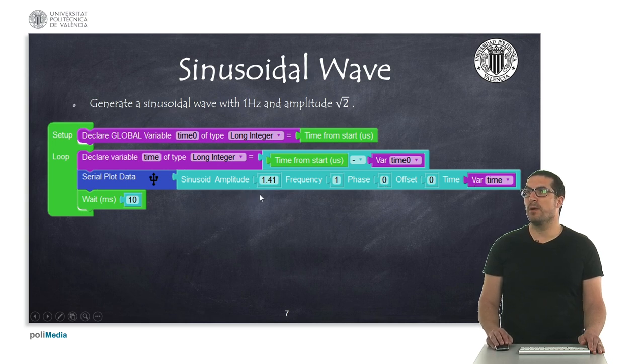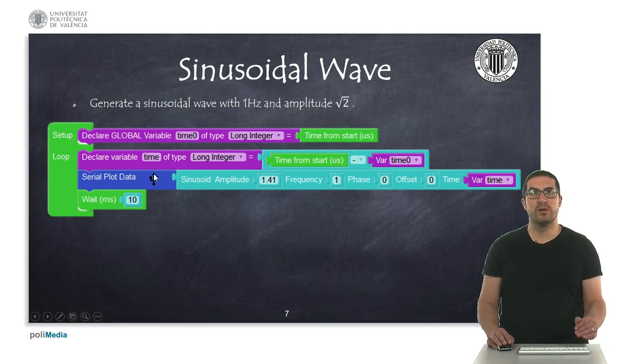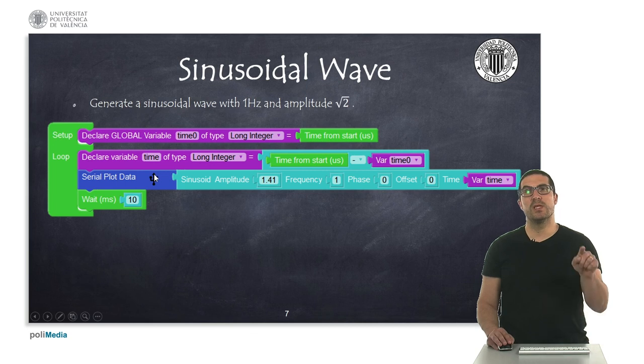Here we are just simply generating a sinusoidal wave with this amplitude, 1 Hz frequency, and 0 phase and 0 offset, and each time we execute this instruction, we plot a new data, so we will see the sinusoidal wave on the Arduino plotter.